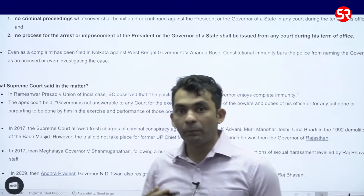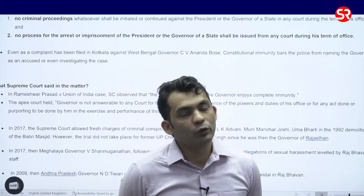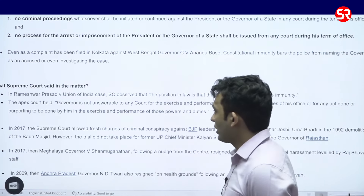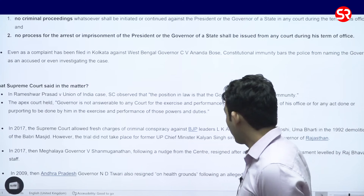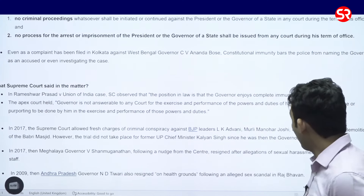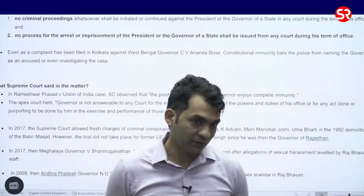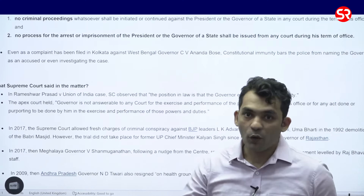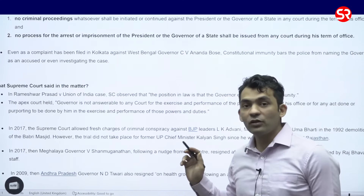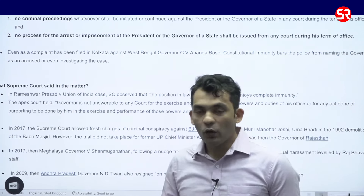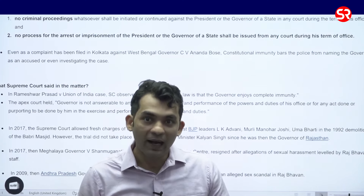There has also been past precedent in this scenario. We can take the example of 2017, when the Supreme Court allowed the pressing of charges of criminal conspiracy against L.K. Advani, Murli Manohar Joshi, and Uma Bharti in the 1992 demolition of the Babri Masjid case. However, one person — Kalyan Singh, who was the Governor of Rajasthan — was exempt, as no case or trial could be initiated against him at that point in time.